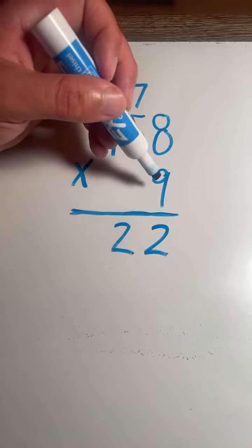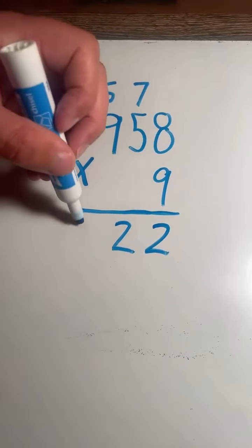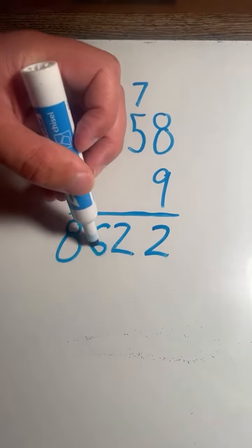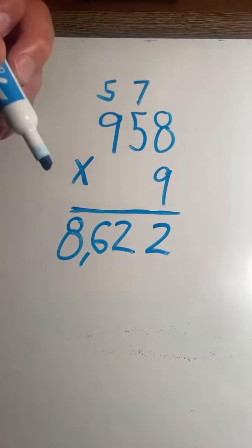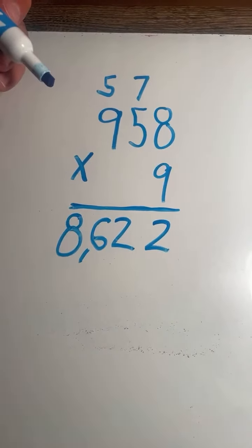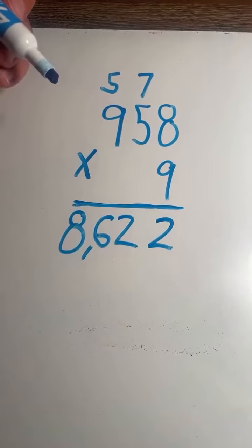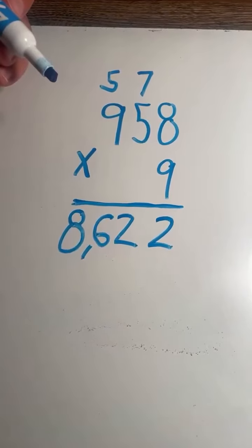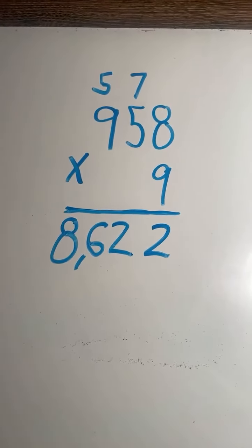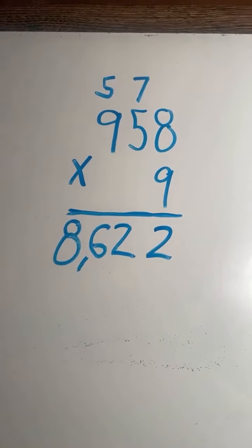9 times 9 equals 81, plus 5 equals 86. So 958 times 9 equals 8622. We are going to keep rocking out with three-digit by one-digit multiplication.